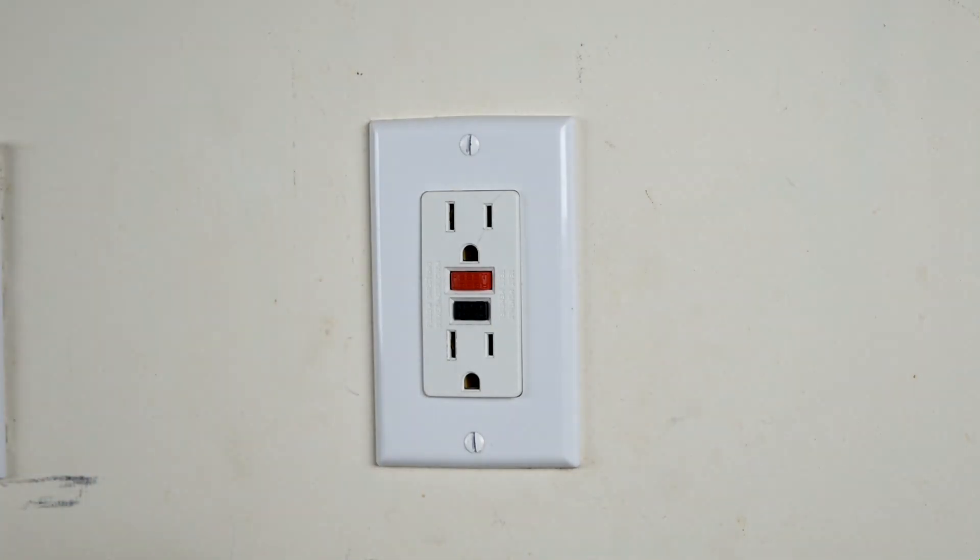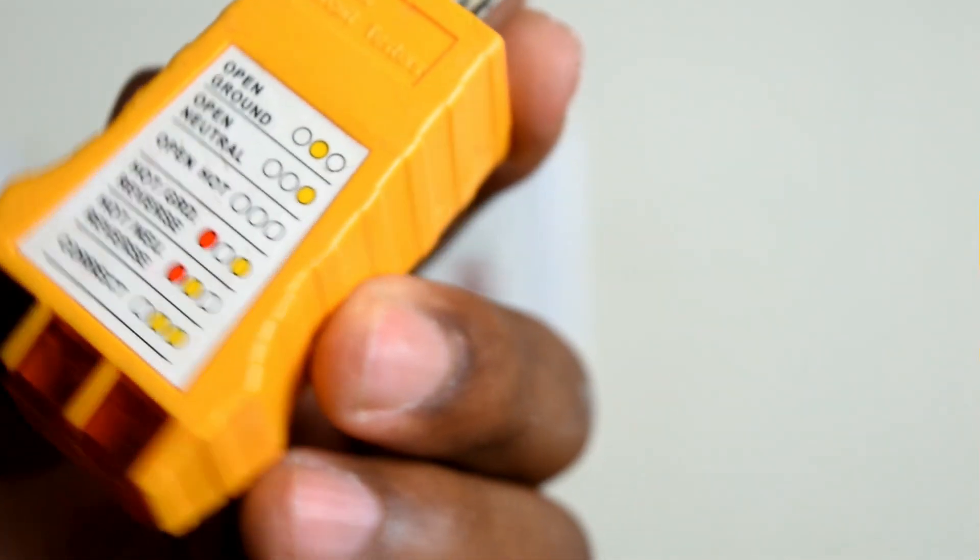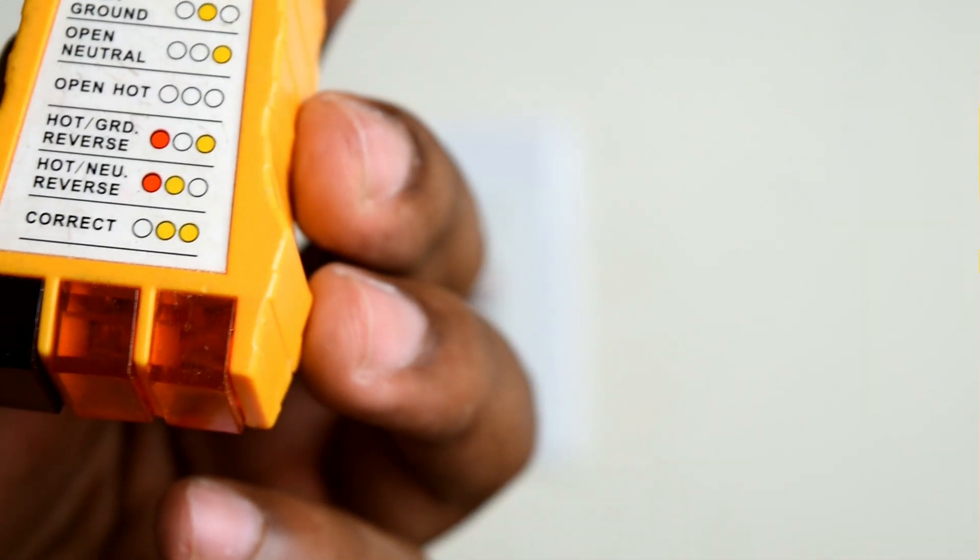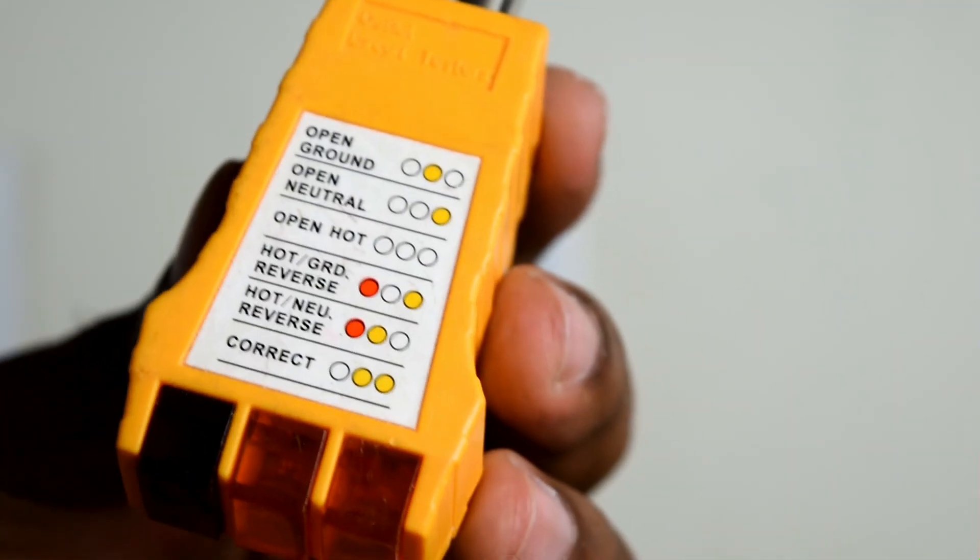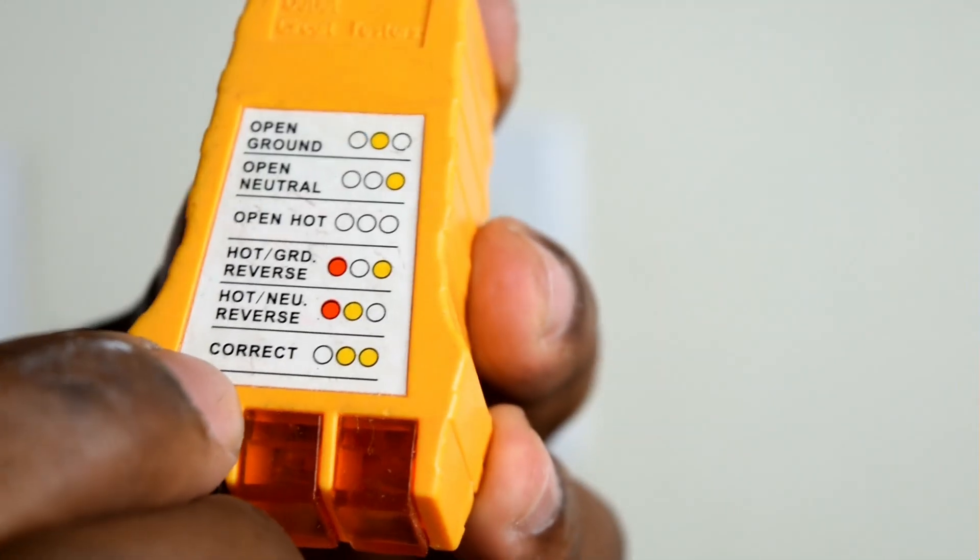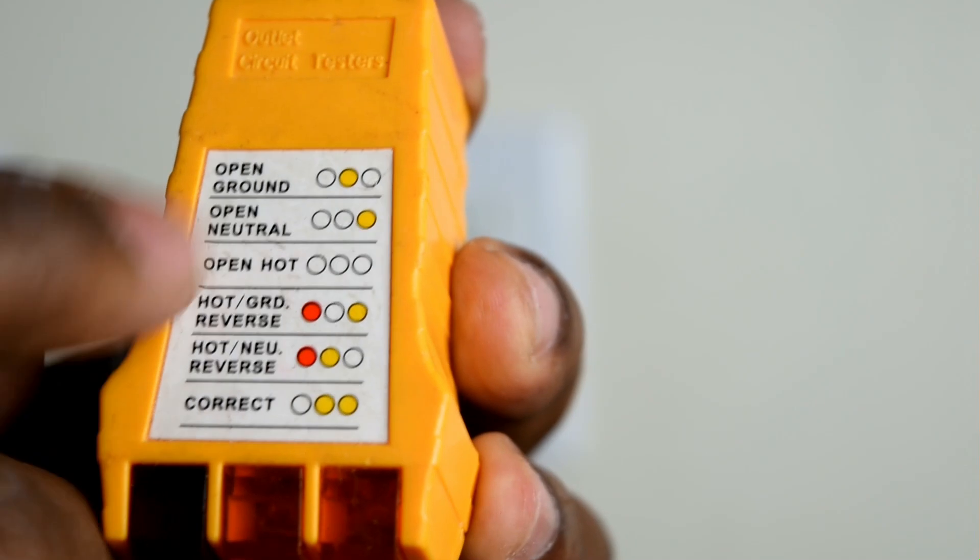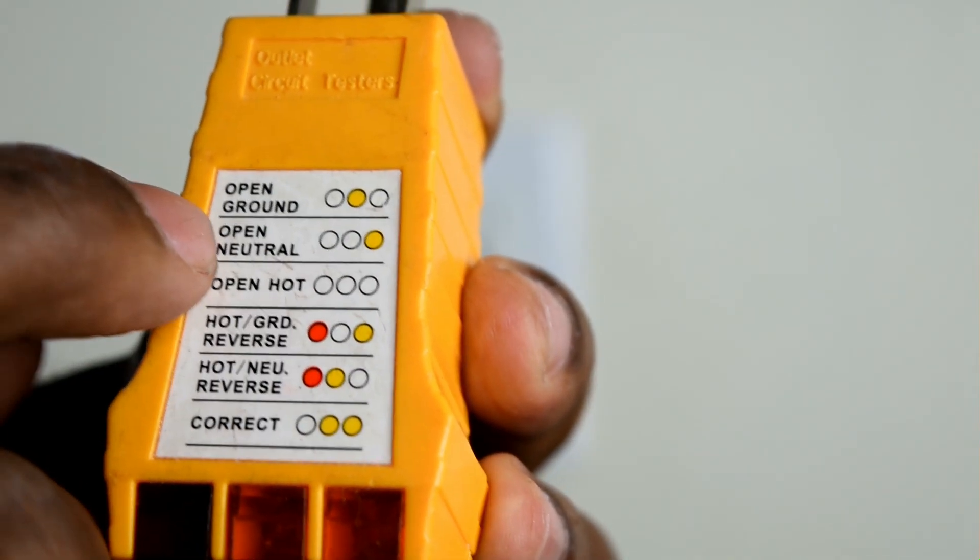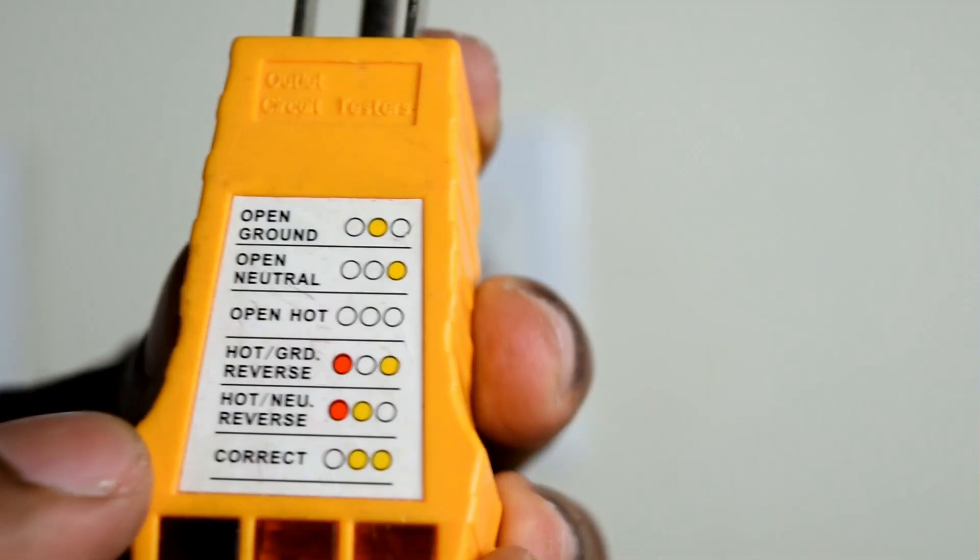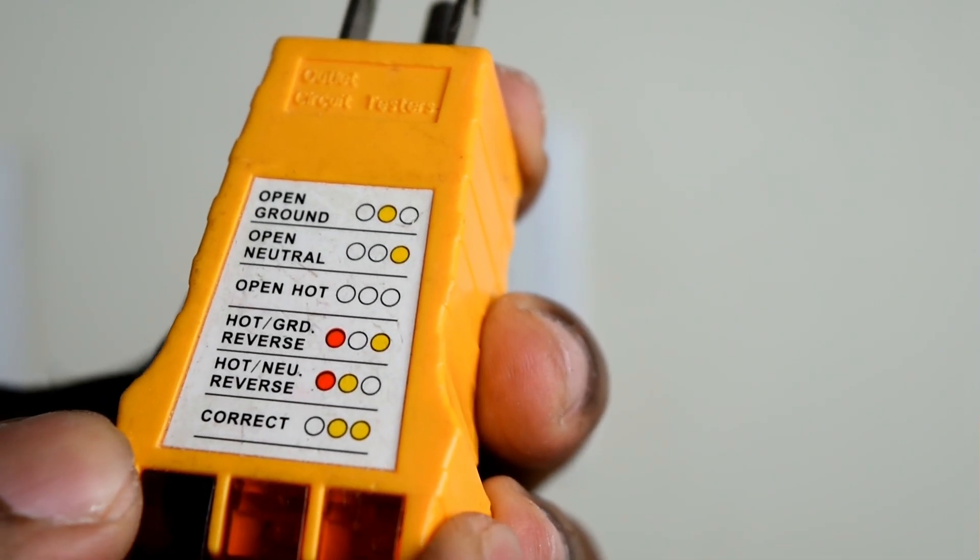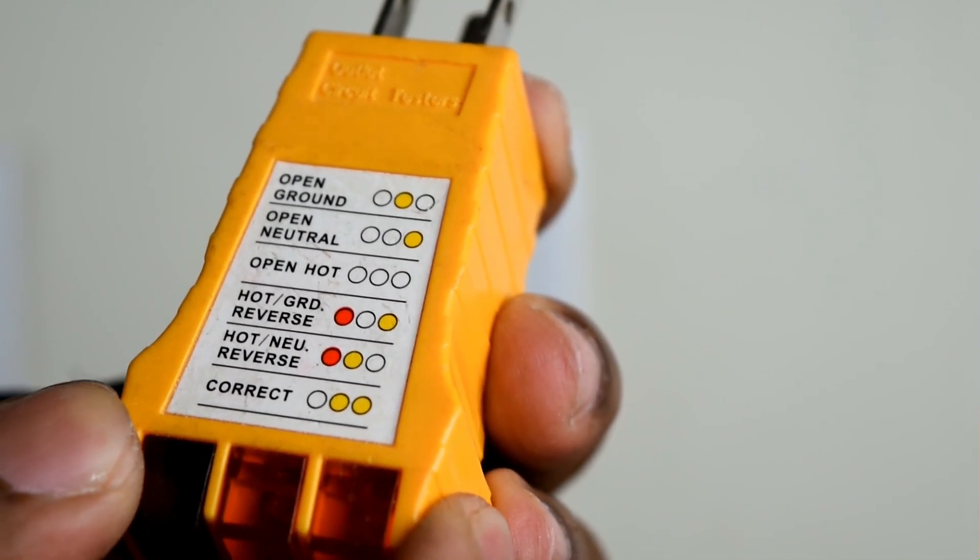So now I'm going to go flip the breakers back on and test this thing. I'm going to use this tool, which is an outlet tester, to basically test my wiring and make sure that it's wired correctly. How this works is you plug this in and it tells you if something goes wrong. Like if you had an open ground, you would see that light come on. All these different settings will tell you if you wired it correctly or not.